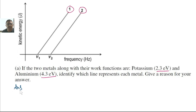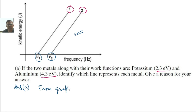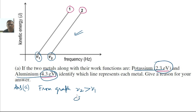Answering part A: from the graph, we can say that the threshold frequency of metal 2 is greater than the threshold frequency of metal 1. The work function of aluminum happens to be greater than the work function of potassium. This clearly suggests that graph 2 corresponds to aluminum and graph 1 corresponds to potassium.